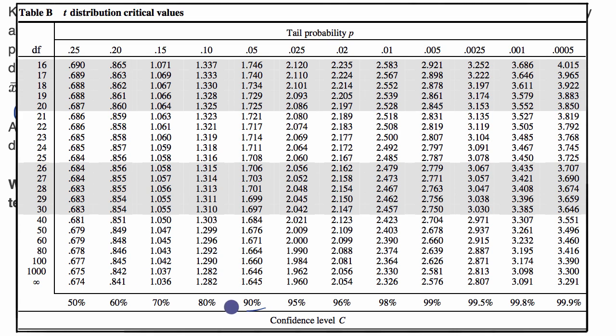So our confidence level, 90%, and then our degrees of freedom, 17, so that is that row. The 90% confidence level is this column, and so that gives us our critical T value of 1.74.